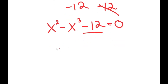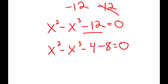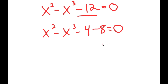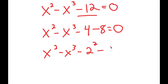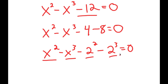Now, negative 12 I can rewrite as negative 4 minus 8. The reason I did this is because 4 I can rewrite as 2 squared, and 8 I can rewrite as 2 to the power of 3. Notice how this is in the form something squared minus something to the power of 3 — so I have 2 squared minus 2 to the power of 3.